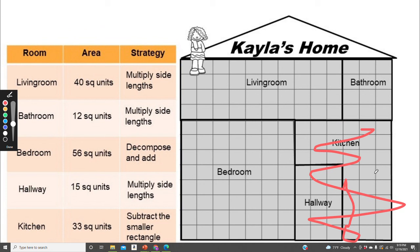Now that I know that the whole rectangle is 48 square units, I can subtract the hallway from the whole rectangle. So 48 minus the hallway was 15. 48 minus 15 equals 33, so that's how I know that the kitchen is 33 square units.